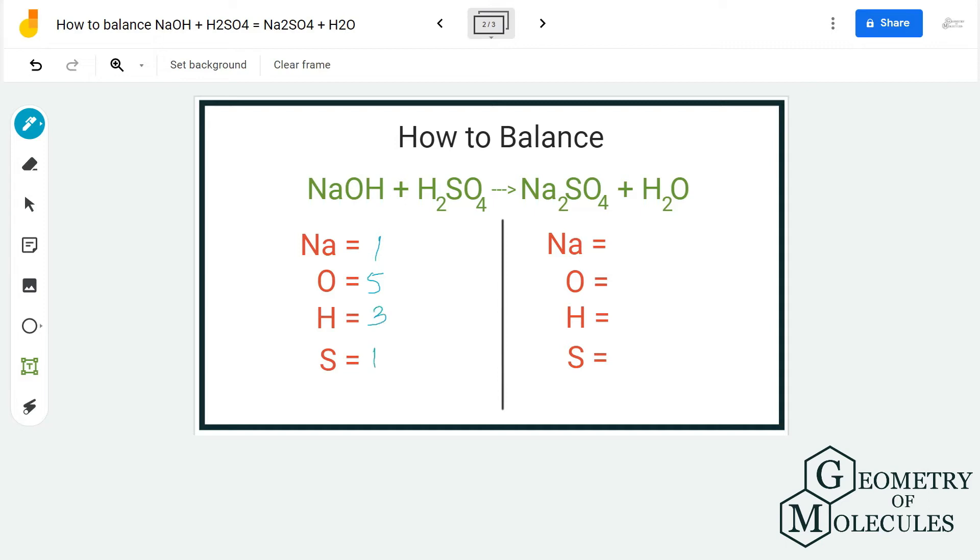So now we have sorted with the reactant side, let's move on to the product side. For product side, we have two atoms of sodium. For oxygen we have 4 plus 1, which makes it 5. For hydrogen we have 2, and for sulfur we have only one.